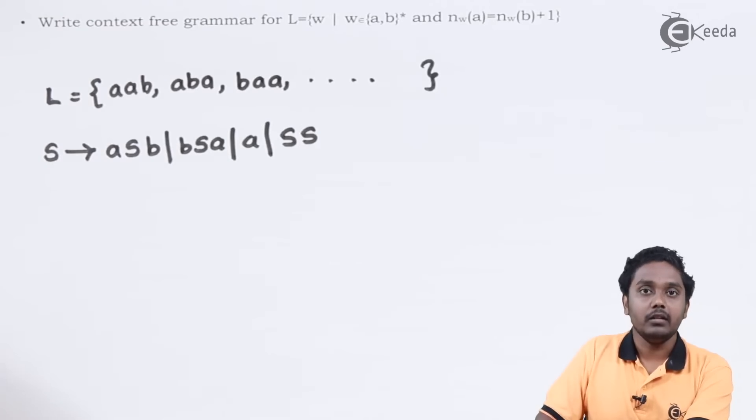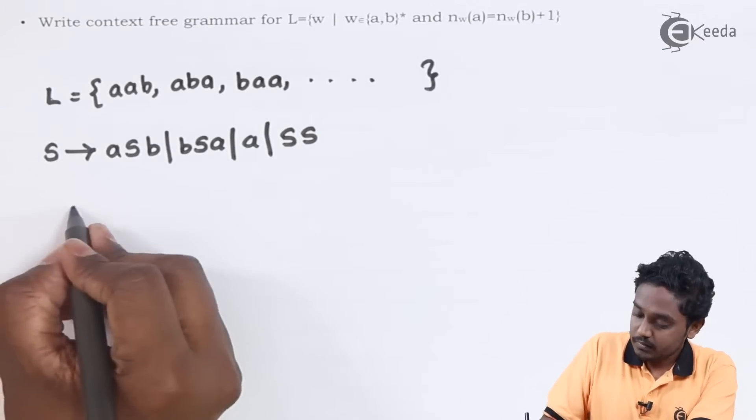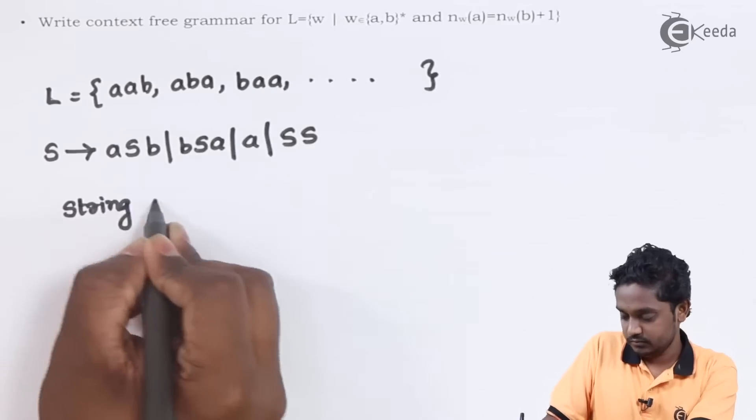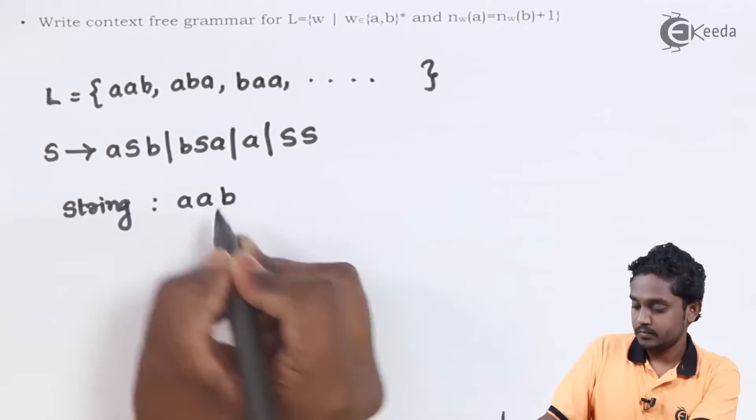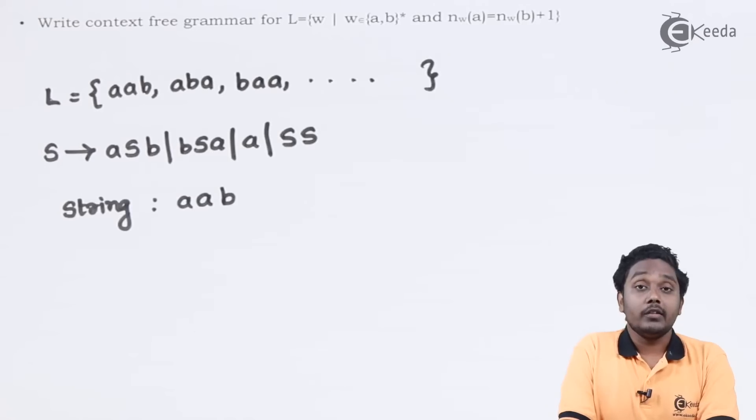Let us take a small string and find the leftmost, rightmost derivations and the parse tree. The string we are considering is AAB, that is 2 A's followed by 1 B. The number of A's is 2, number of B's is 1, so 1 plus 1 is 2.